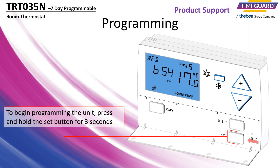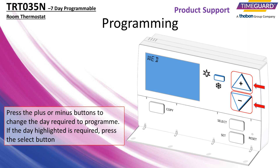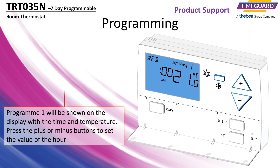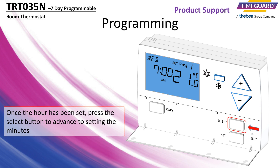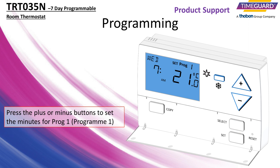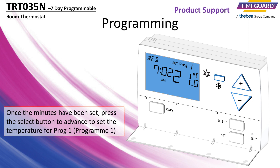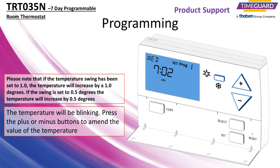To begin programming the unit, press and hold the set button for 3 seconds. Press the plus or minus buttons to change the day required to program. If the day highlighted is required, press the select button. Program 1 will be shown on the display with the time and temperature. Press the plus or minus buttons to set the value of the hour. Once the hour has been set, press the select button to advance to setting the minutes. Press the plus or minus buttons to set the minutes. Once the minutes have been set, press the select button to advance to set the temperature for program 1. The temperature will be blinking. Press the plus or minus buttons to amend the value of the temperature.